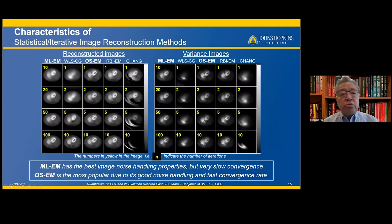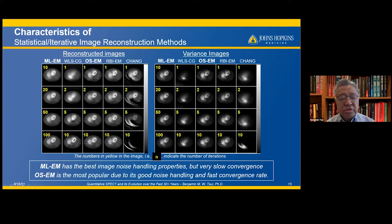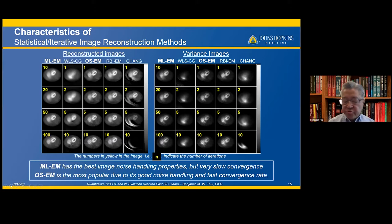This also shows the different characteristics of the statistical iterative image reconstruction methods. The most important is ML-EM, which has the best image noise handling but very slow convergence. OS-EM is the most popular due to its good noise handling and fast convergence rate.